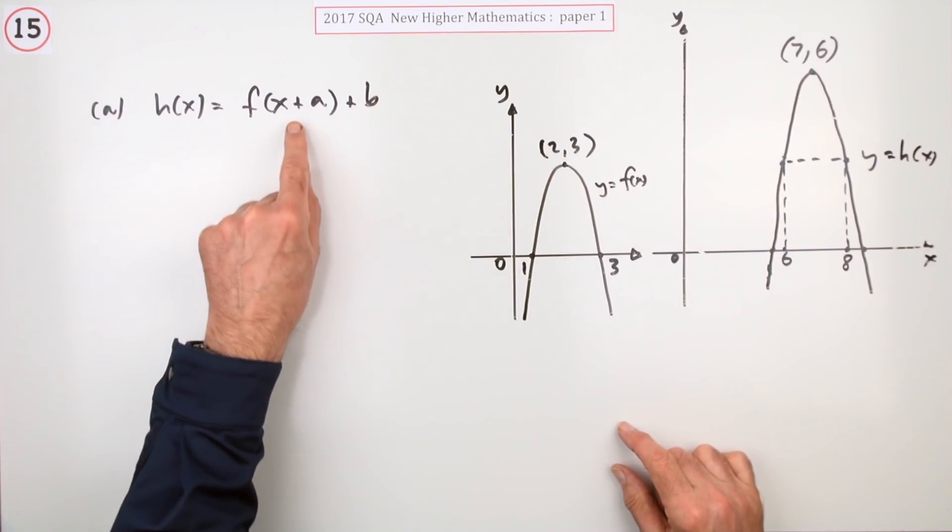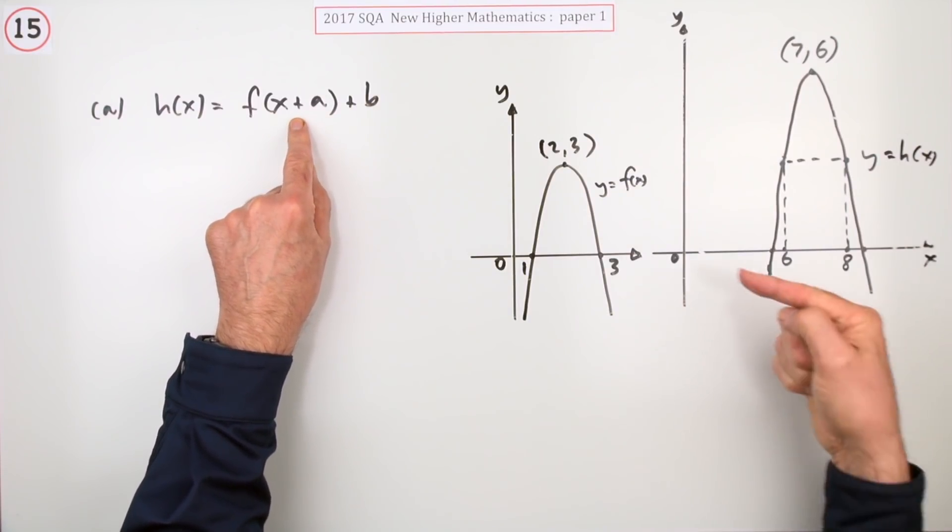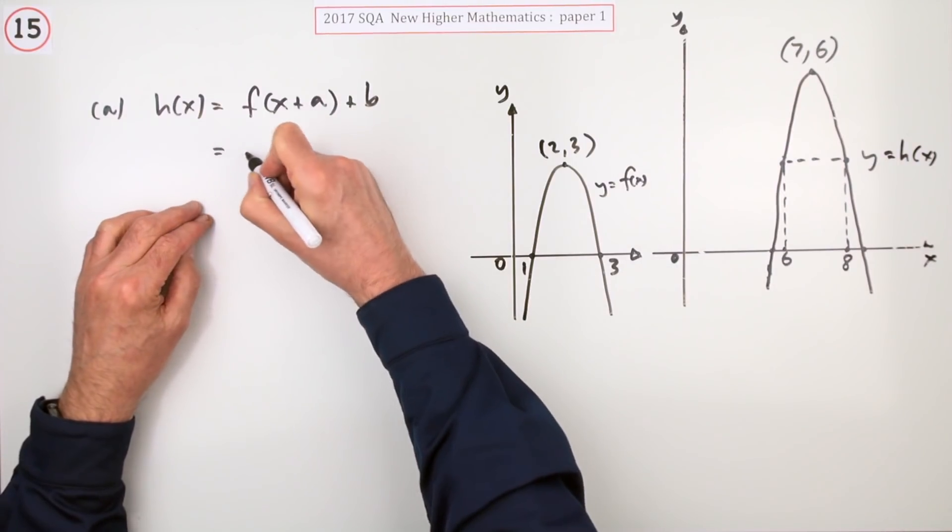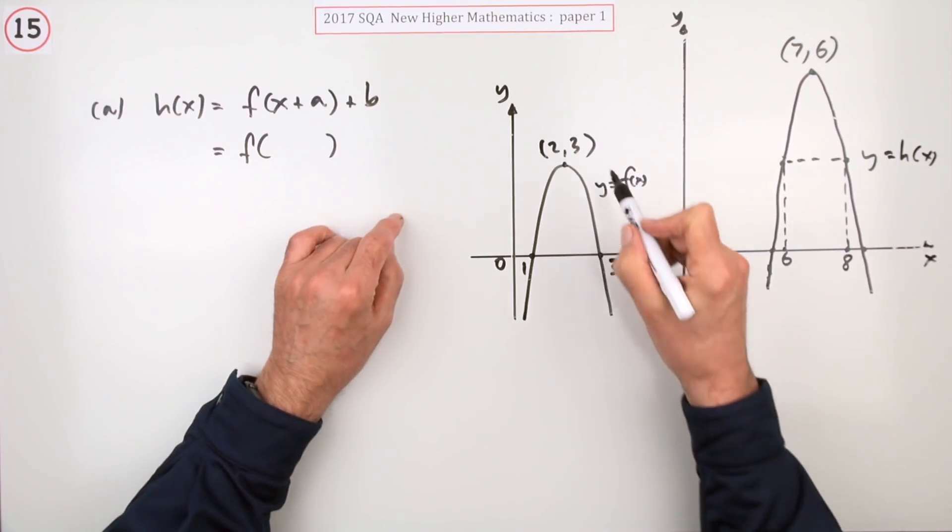Now notice with a plus a, a plus would imply it's going backwards, that a must be negative. What you've actually got is this. It's actually equal to f of... sometimes it's better just to write it down.